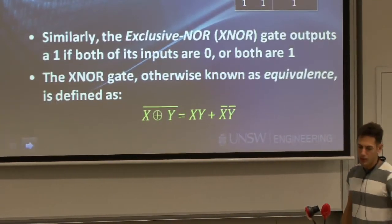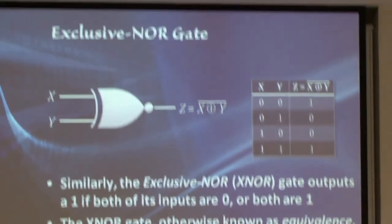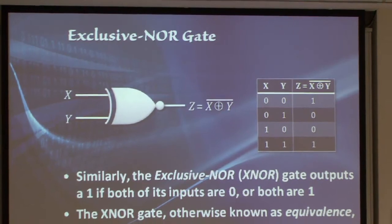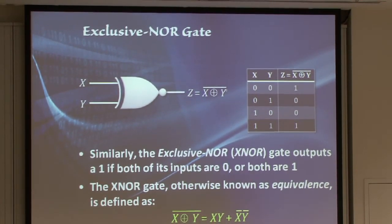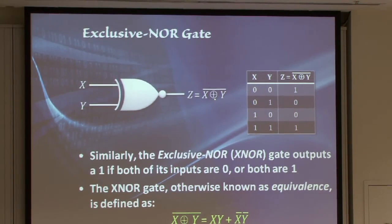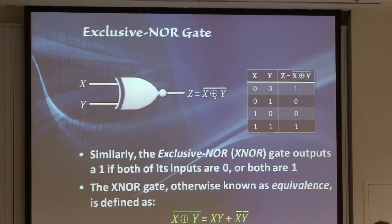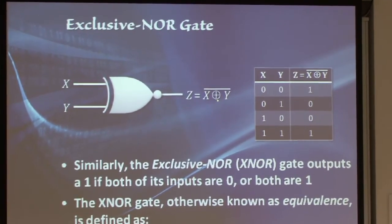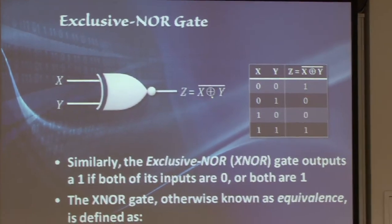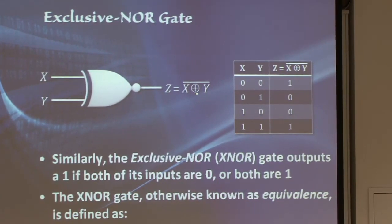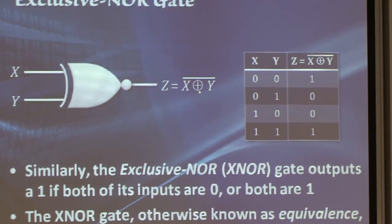On the same logic, the exclusive NOR gate. So you take an exclusive OR and you invert the output. The notation is just an exclusive OR with a bar over it. And the truth table is just inverted. So either when both of them are 0 or when both of them are 1, but not when they are different from each other.